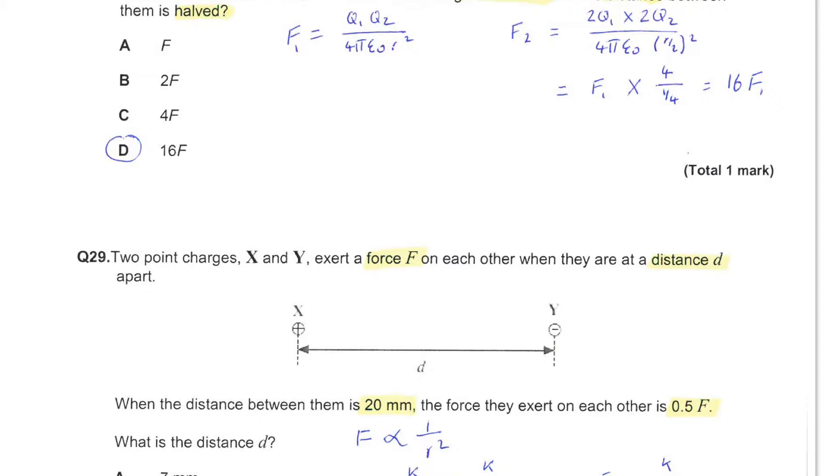A repulsive force F acts between two positive point charges, separated by a distance R. You are asked to find the force when each charge is doubled and the distance between them is halved.